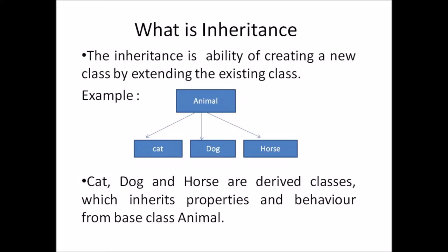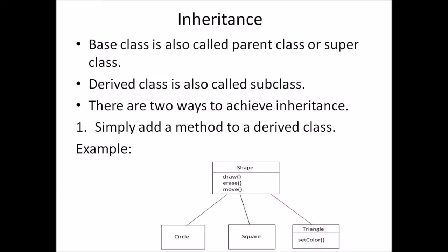Let us consider an example. Cat, dog and horse are the derived classes which inherit the properties and behavior from base class animal. Base class is also called as parent class or super class. Derived class is also called subclass.